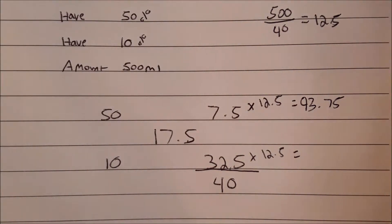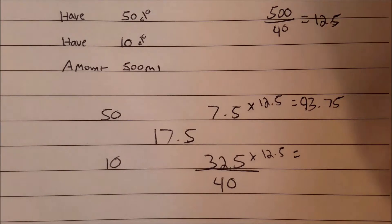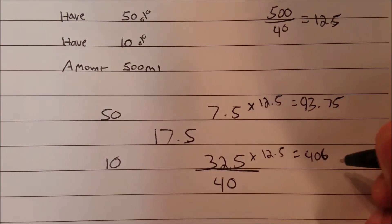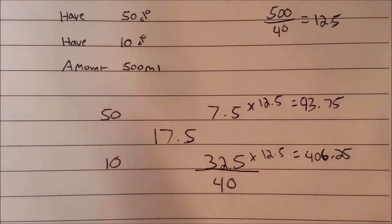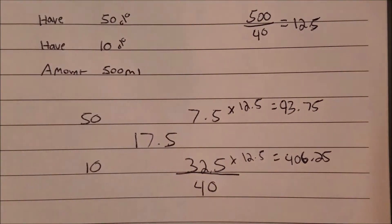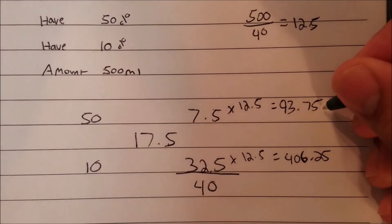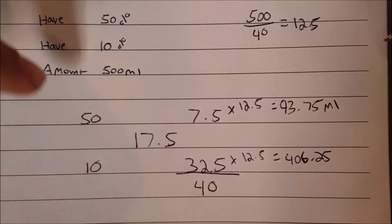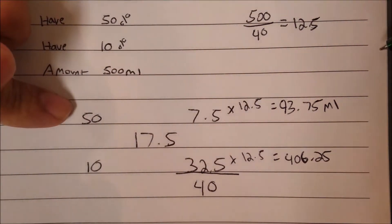And then 32.5 times 12.5 equals 406.25. So what does that mean? The 93.75, that's mls. That's telling you that you're going to need from dextrose 50% vials, you're going to need 93.75 mls of that.